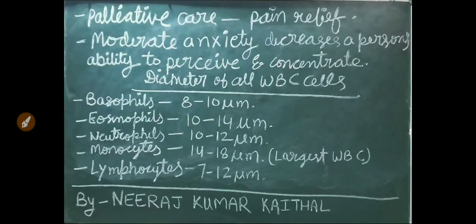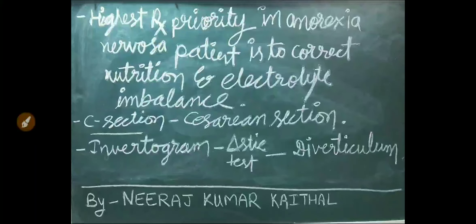Diameter of all types of white blood corpuscles: basophils 8 to 10 micrometers, eosinophils 10 to 14 micrometers, neutrophils 10 to 12 micrometers, monocytes 14 to 18 micrometers (the largest WBC), lymphocytes 7 to 12 micrometers. The highest treatment priority in anorexia nervosa is to correct nutrition and electrolyte imbalance.